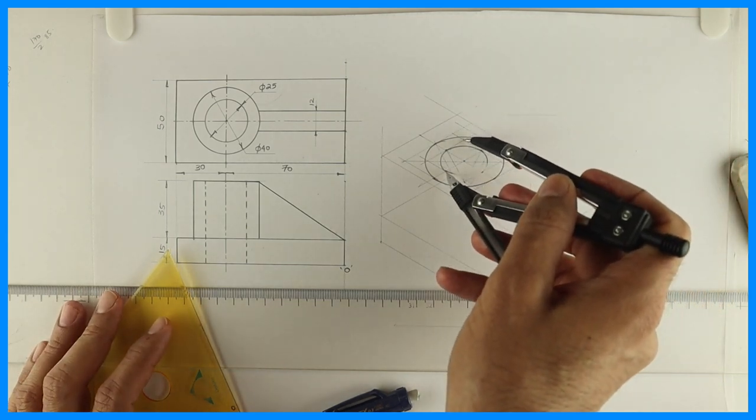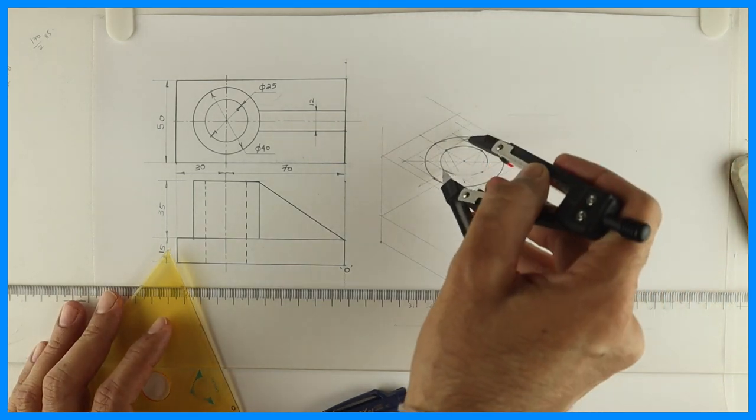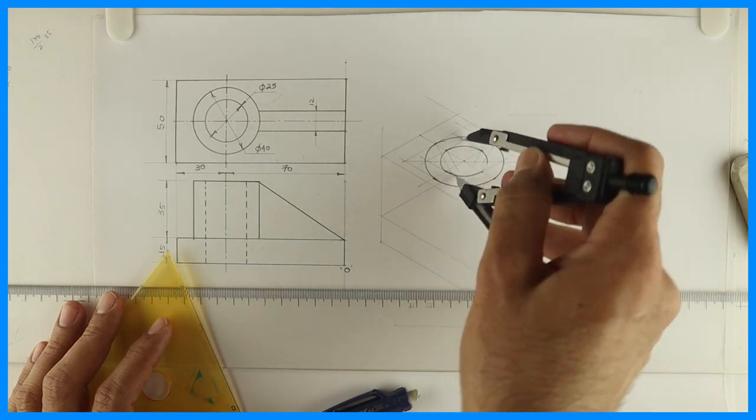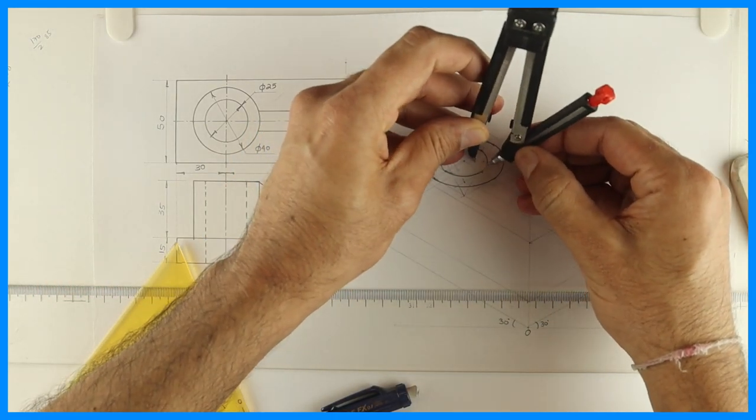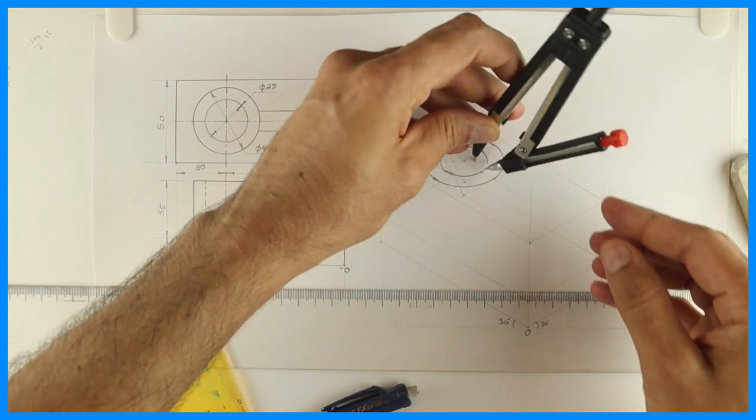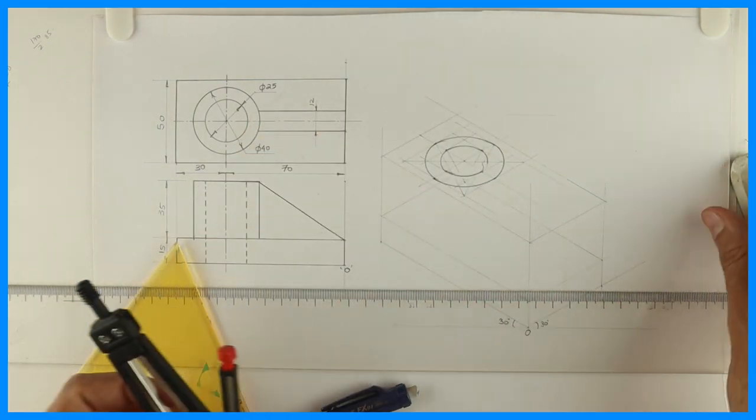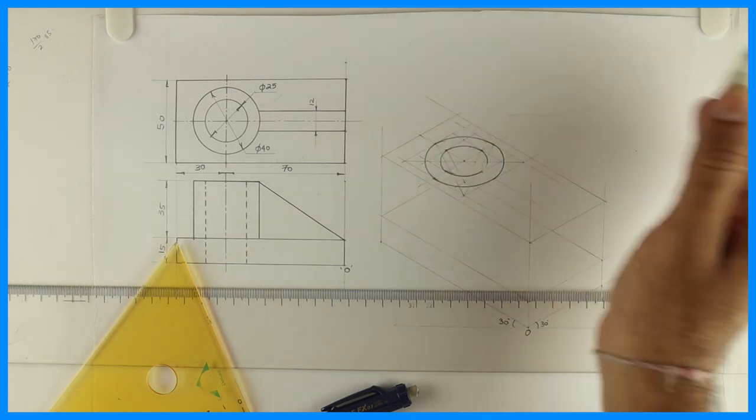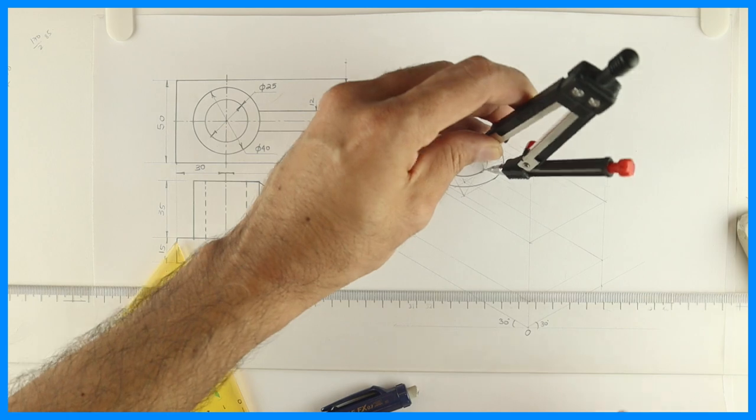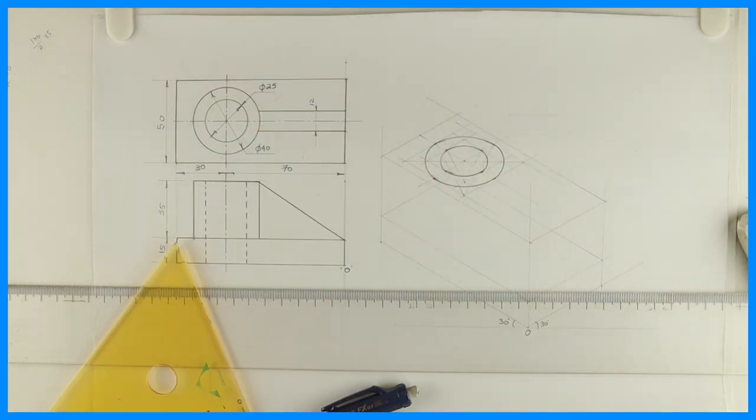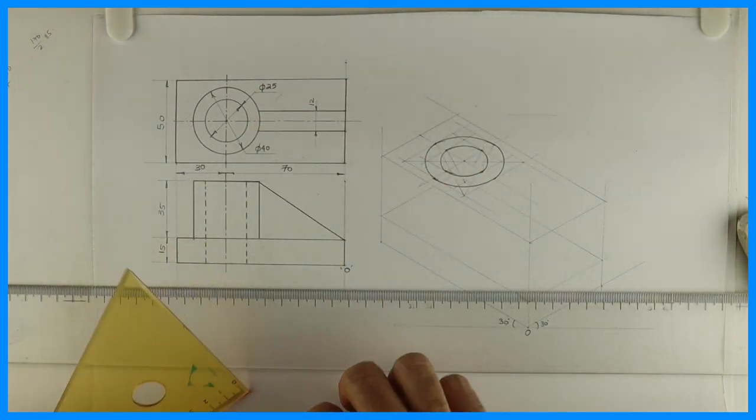Now remember one thing, when you are taking smaller radius, there is a possibility that it won't come that accurate. So you need to do it properly.